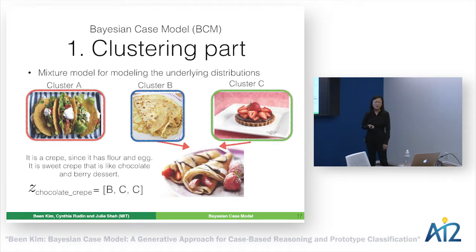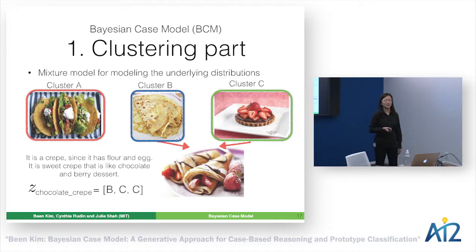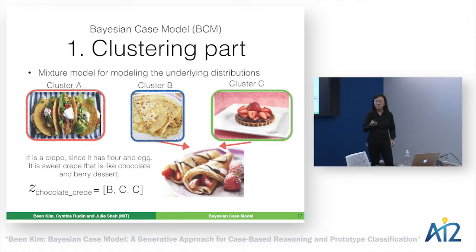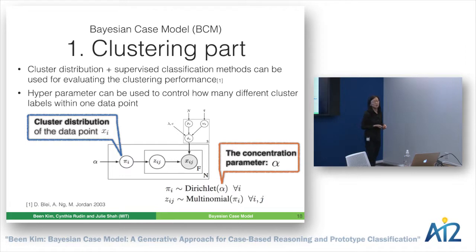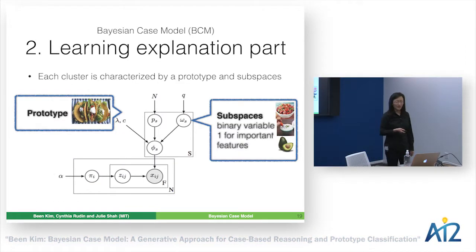Another thing the mixture model offers is the hyperparameter alpha. This gives flexibility in deciding how many different clusters you want per data point. For example, if you want a sweet crepe data point to be mostly cluster C (dessert), you can change alpha to indirectly encourage that behavior.